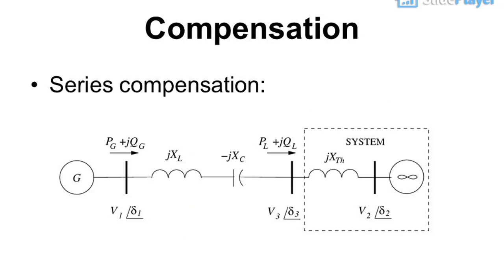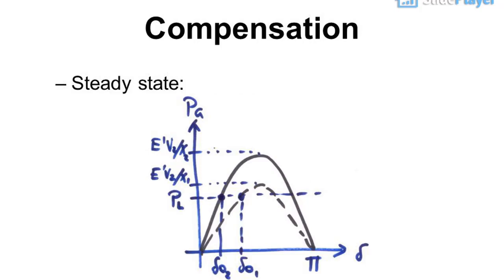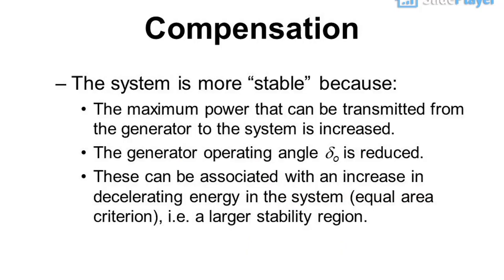Series Compensation in Steady State: with compensation the system is more stable because the maximum power that can be transmitted from the generator to the system is increased, the generator operating angle δ is reduced. These can be associated with an increase in decelerating energy in the system (Equal Area Criterion), i.e., a larger stability region.